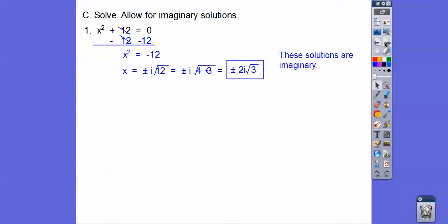Your book wants you to recognize that this is an imaginary solution. Again, if this would have started with minus 12, then we would have done plus 12 plus 12, and we would have gotten a real solution. So your book might say it's a real solution when it happens to be x squared equals a positive number.